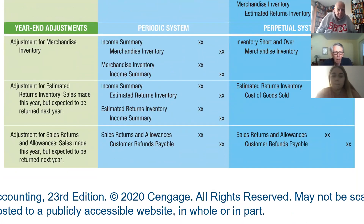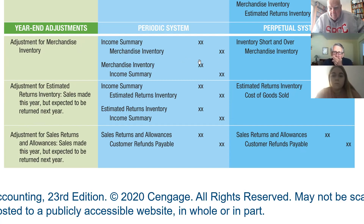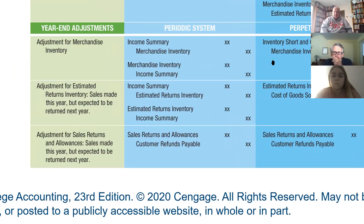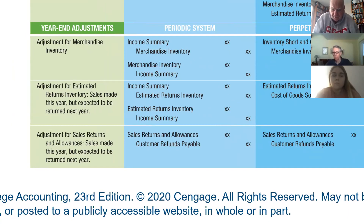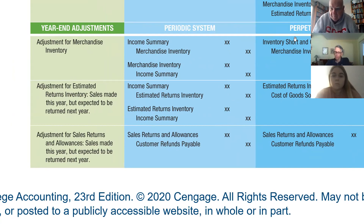Now, with what we've discussed, let's look at year-end adjustments under the perpetual system. For inventory, you still have the out-with-the-old, in-with-the-new adjustment on the worksheet. But here's how easy it is on the perpetual side: since our perpetual system tells us we had $800,000 in inventory, and we counted and found $795,000, that $5,000 difference is your journal entry — debit cost of goods sold (inventory short or over), credit merchandise inventory.